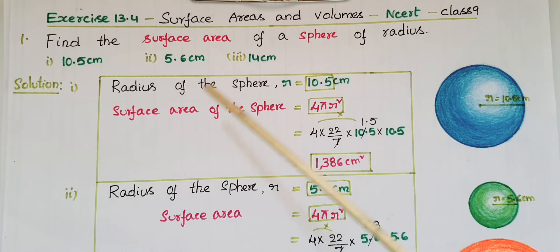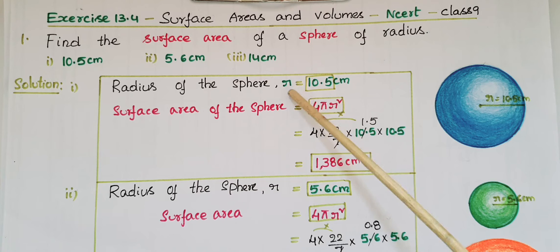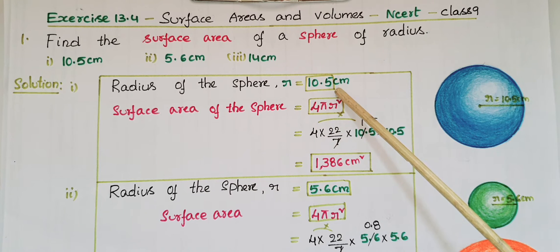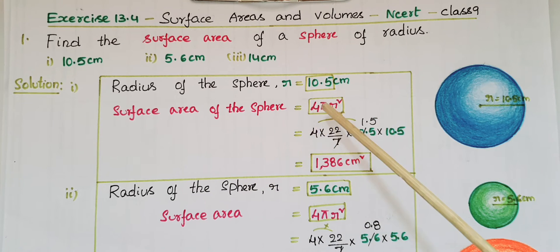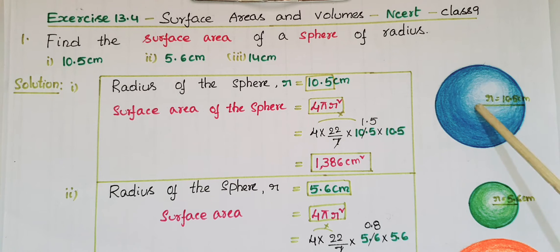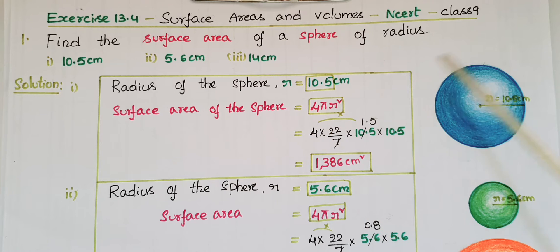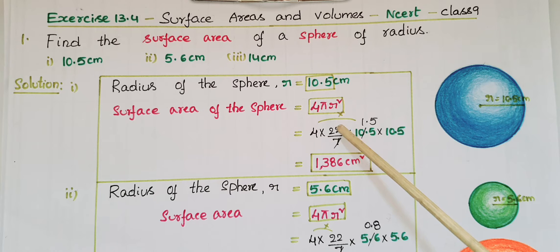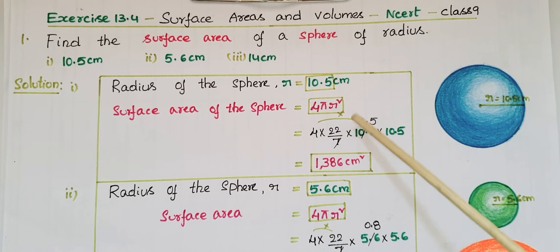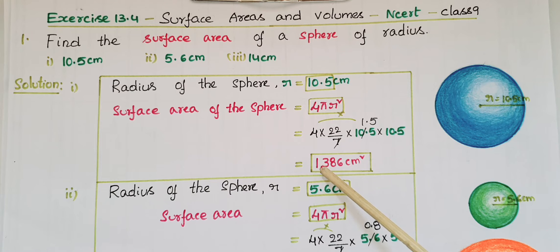For the first one, the radius of the sphere is r = 10.5 centimeters. The surface area of a sphere is equal to 4πr². Using π = 22/7, the surface area is 4 × (22/7) × 10.5 × 10.5, which equals 1386 centimeters square.